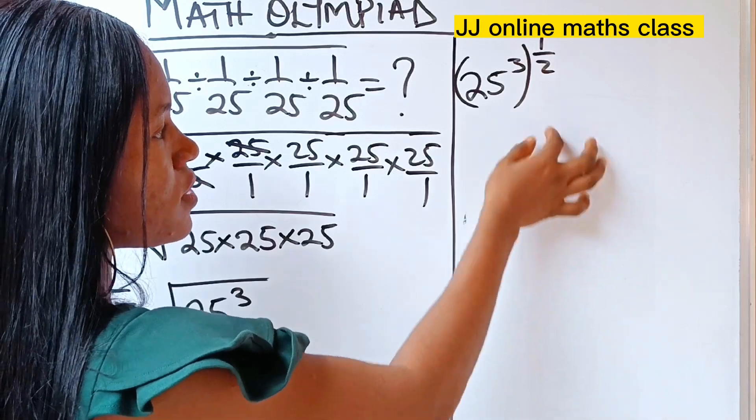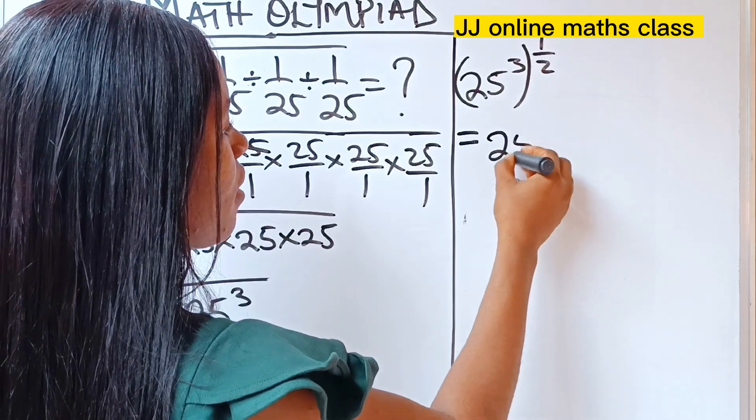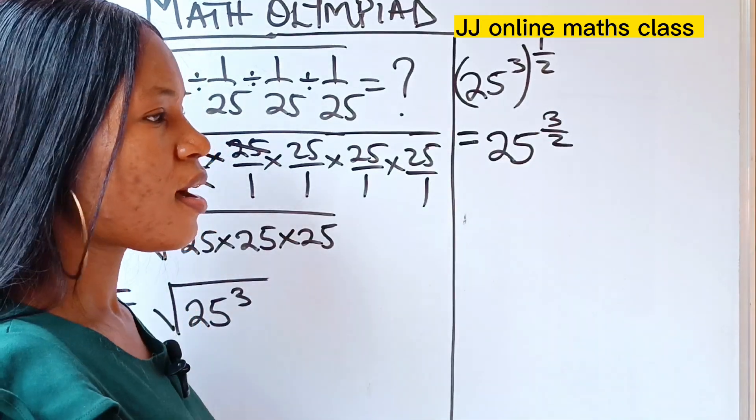So we are going to apply what I just explained to this. That means that this is the same thing as 25 to the power of 3 times half will give you 3 over 2.